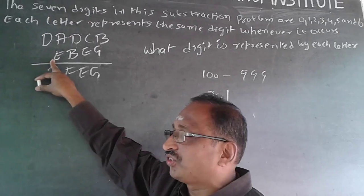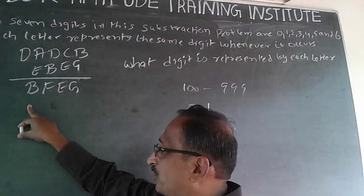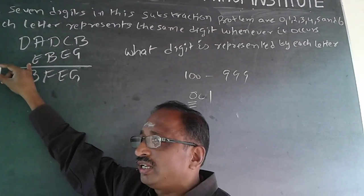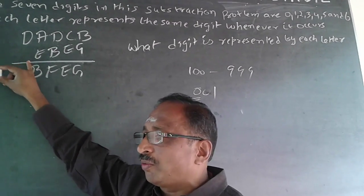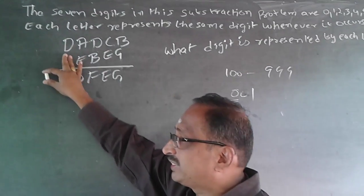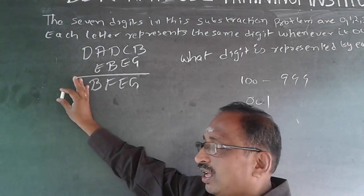Similarly, E is not 0. D can't be 0, E can't be 0, B can't be 0 — because these are all starting numbers.